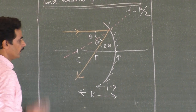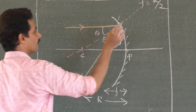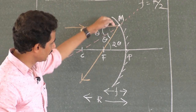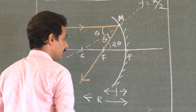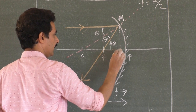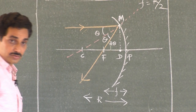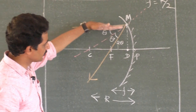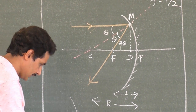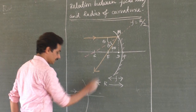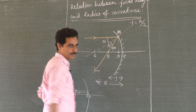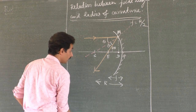So this angle is 2 theta and this is 2 theta. I'll name the triangle vertices: C is the center, F is the focus, and M is the point where the ray hits the mirror. I drop a perpendicular from M, calling the foot D. Note that DP is negligibly small when the ray is very close to the principal axis — D and P almost overlap for paraxial rays.